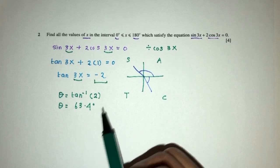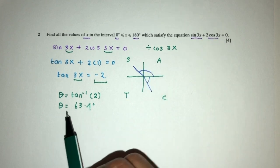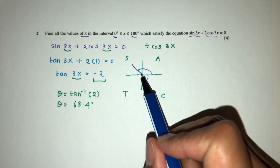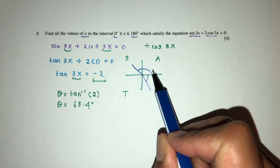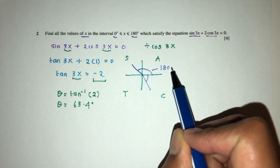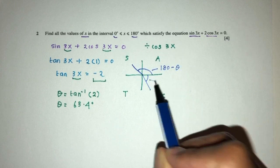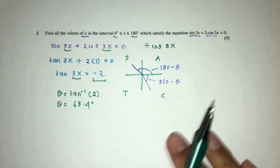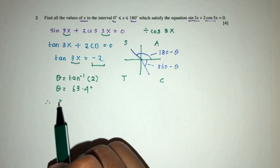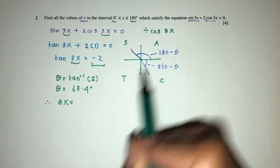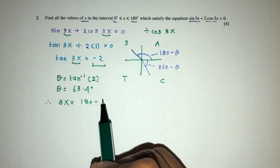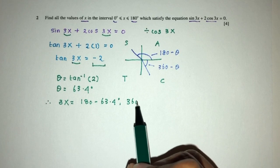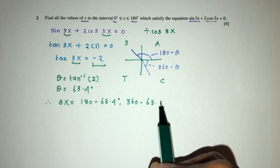So this will be the value when it is positive. However, by observing on the diagram, you can see it will have to be this angle. This is 180 minus theta. And this has to be 360 minus theta. So finally, the value of 3x, according to the quadrants, have to be first is 180 minus 63.4, or 360 minus 63.4.